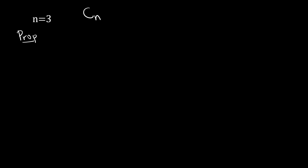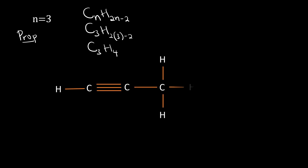Let's look at n equal to three. We know the prefix we shall use is 'prop-'. Substituting into the general formula CₙH₂ₙ₋₂, we get C₃H₂ₓ₃₋₂, which gives C₃H₄. The displayed structural formula has carbon atoms numbered one, two, and three, with a triple bond between carbon atom number one and carbon atom number two, which makes this an alkyne.